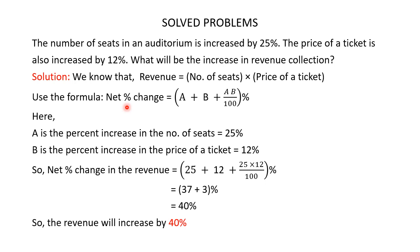We use the formula a + b + (ab/100) percent. Here a is the percent increase in number of seats which is 25, and b is the percent increase in price of ticket which is 12. So net percent change in revenue is equal to 25 + 12 + (25 × 12)/100 = 37 + 3 = 40 percent. Since the result is positive, the revenue will increase by 40 percent.